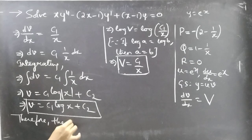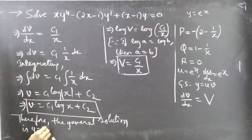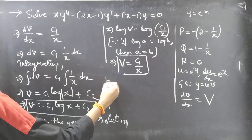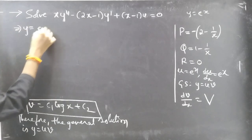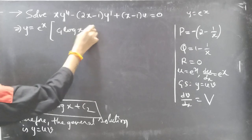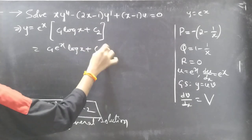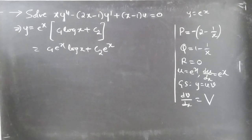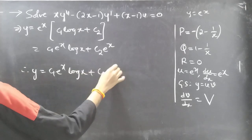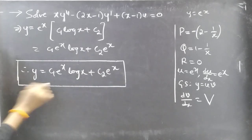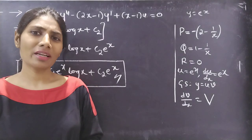Therefore the general solution is y = u·v = e^x·(c₁·log x + c₂), which gives y = c₁·e^x·log x + c₂·e^x. This is the required solution, and this completes the problem. We have seen a problem on the reduction of order method in this video. Hope you understood. See you in the next video.